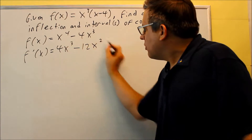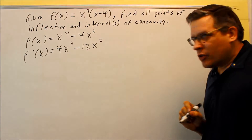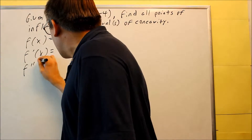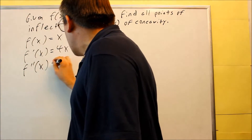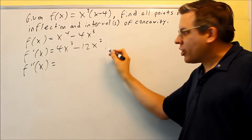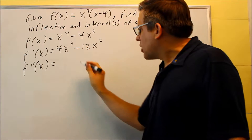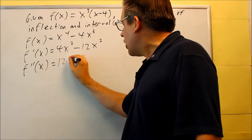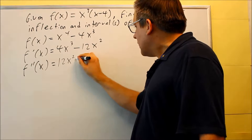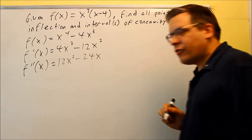I want to take the derivative of the first derivative to get the second derivative. Using the power rule again: 3 comes down and multiplies by 4, giving 12x squared, and then I get minus 24x. So the second derivative is 12x squared minus 24x.